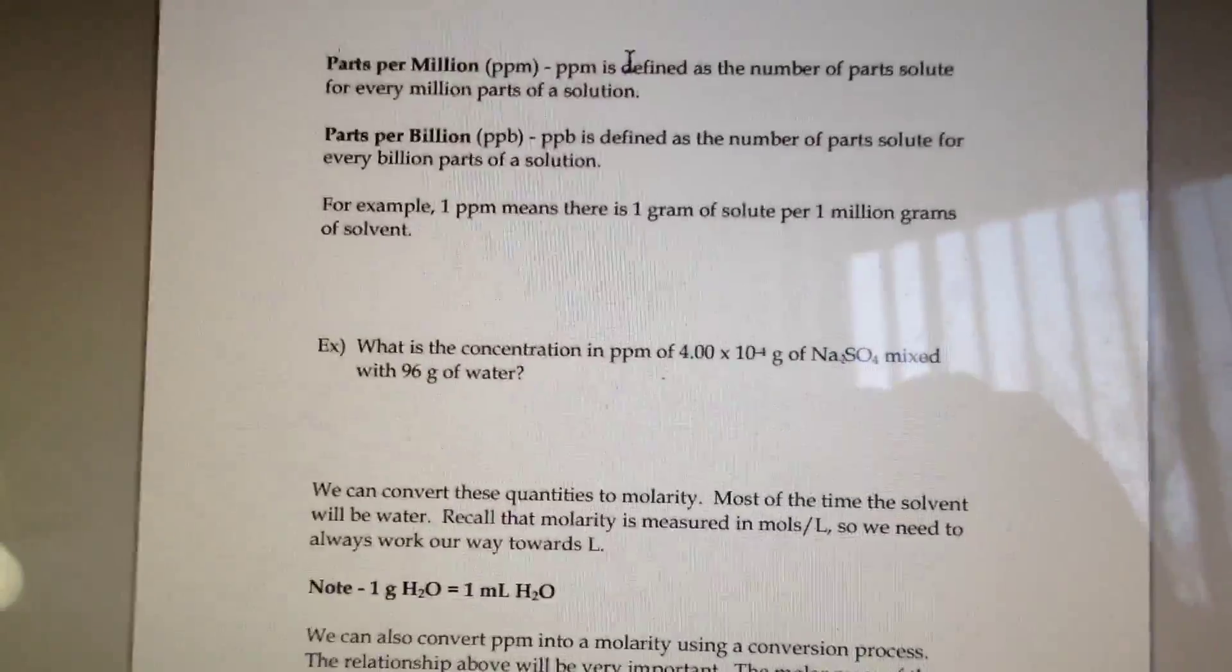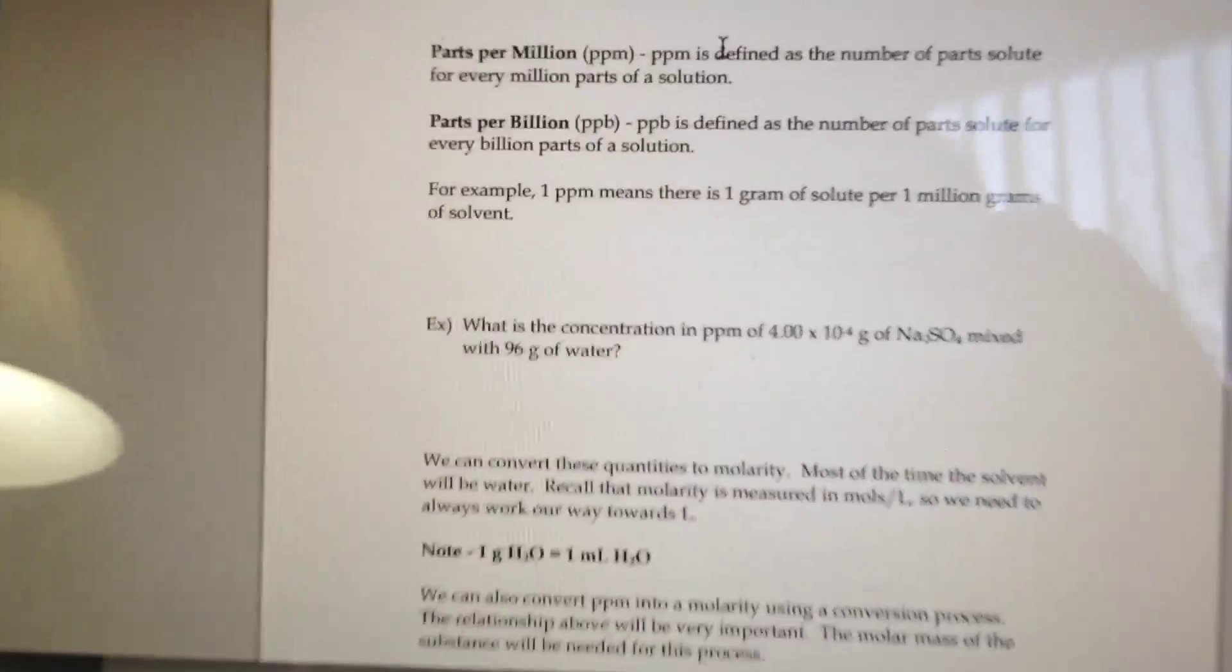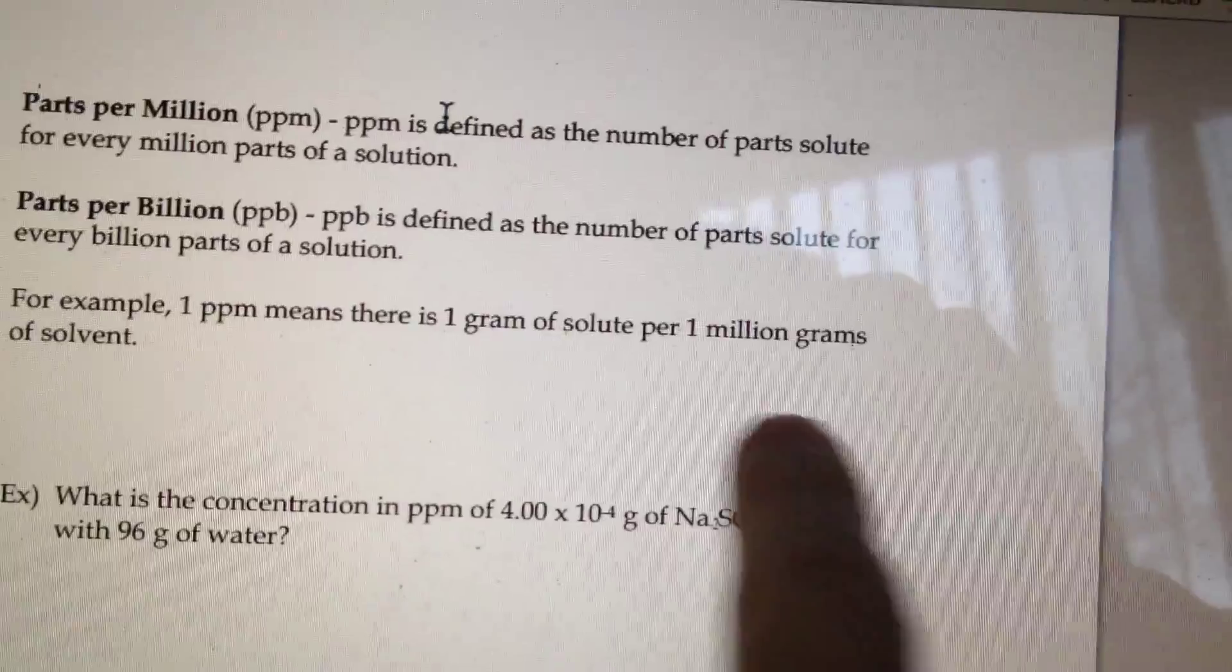Okay guys, so this is the parts per million, parts per billion part that was cut off on section 2.2. This stuff is just some basic unit conversion stuff. You just gotta know the formula. It's not there, it should go right here on this part of the screen on your notes though. And basically,